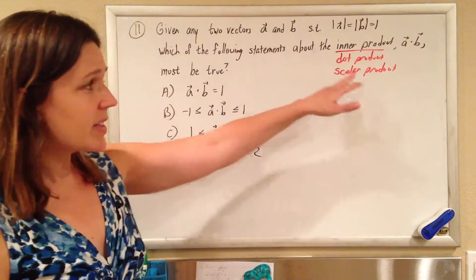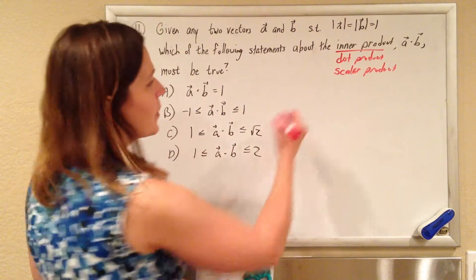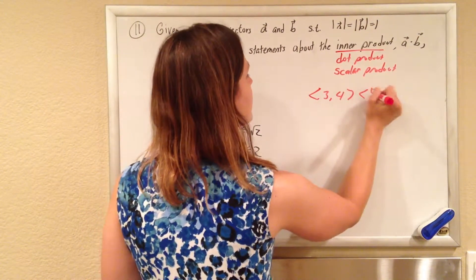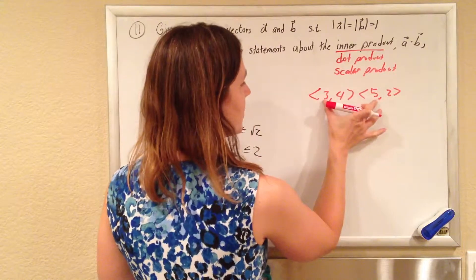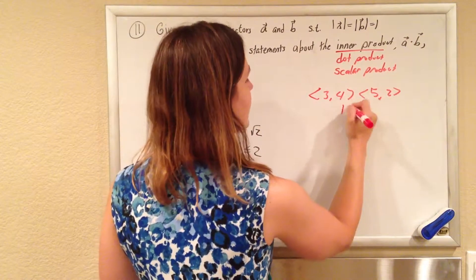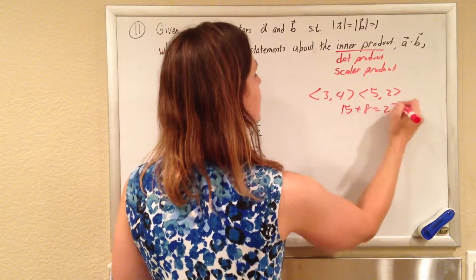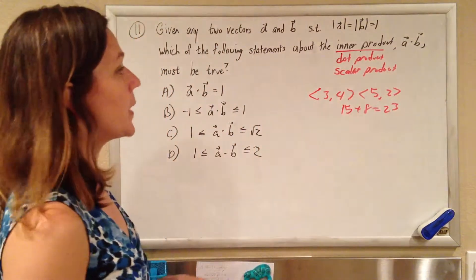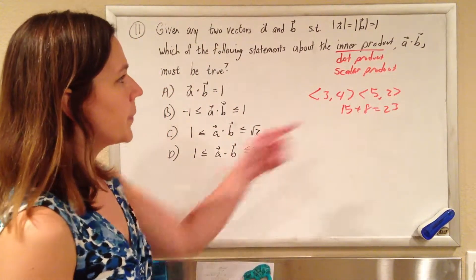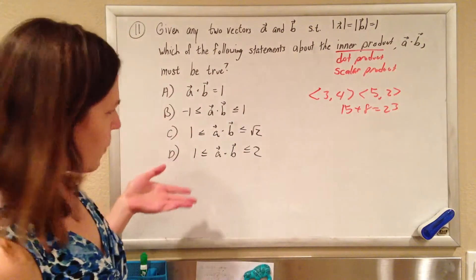So when we think dot product, we're like, oh yay, I remember dot product. If I have two vectors, I can just find my dot product by multiplying these guys and multiplying those guys and adding them up. 15 plus 8 is 23, I know dot product. But, darn, that doesn't seem to help us here.